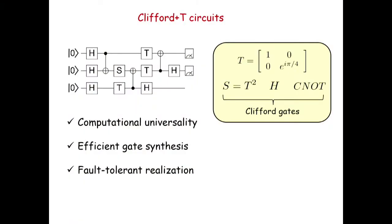We shall only consider Clifford plus T circuits. We have n qubits initialized in the zero state, and then we apply some sequence of gates that belong to this Clifford plus T gate set. Finally, we measure some subset of qubits in the computational basis. These Clifford plus T circuits have nice properties: they are universal, they have nice algebraic structure enabling efficient gate synthesis, and we know how to implement them fault-tolerantly — for example, with the surface code.